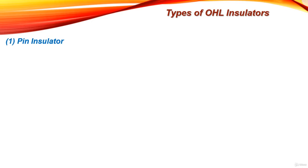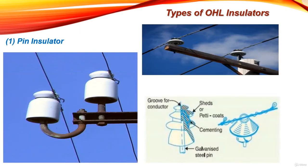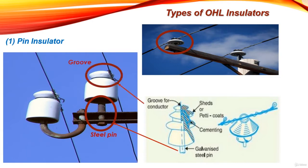The pin type insulator consists of non-conducting materials such as porcelain, glass, or polymers. As the name suggests, the pin type is secured to the cross arm on the pole using a steel pin. There is a groove on the upper end of the insulator for housing the conductor, and cement is used to fix all steel parts with the insulator material like porcelain or glass.